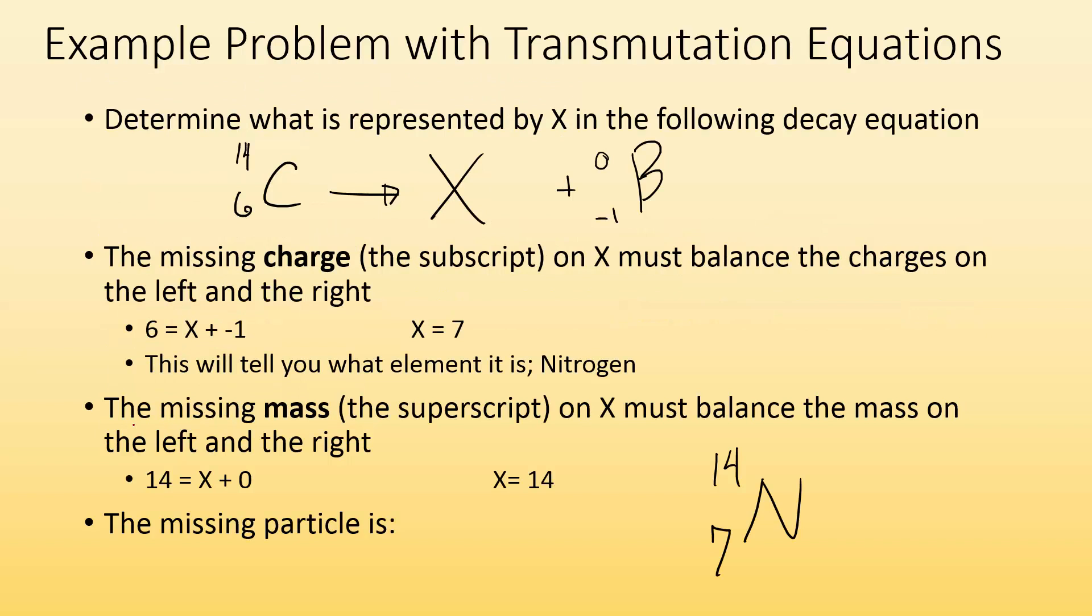Let's take a look at example problems. Determine what is represented by X in the following decay equation. The way I do it is I always use this arrow as kind of my separator. On the top, I'm trying to balance the mass. On the left side, I have a mass of 14 from the carbon 14. On the right, I have zero and some number. So what's that number got to be? It's got to be 14. So this number up here for X has got to be 14.